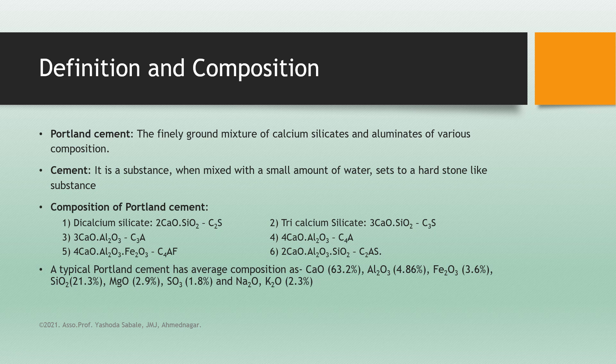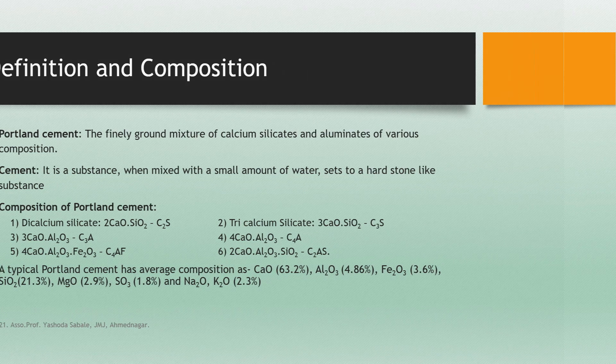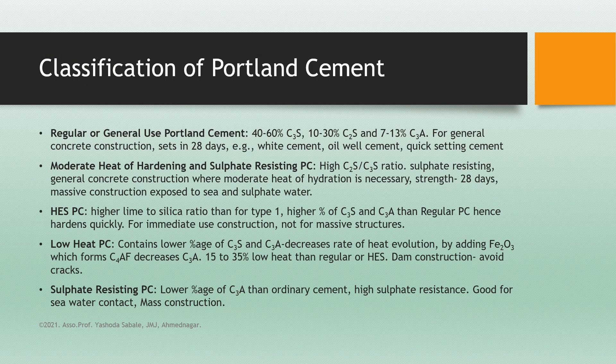The typical Portland cement has an average composition of: CaO (lime) 63.2%, Al₂O₃ 4.86%, Fe₂O₃ 3.6%, SiO₂ (silica) 21.3%, MgO 2.9%, SO₃ 1.8%, and oxides of potassium and sodium 2.3%. Then the classification of Portland cement.